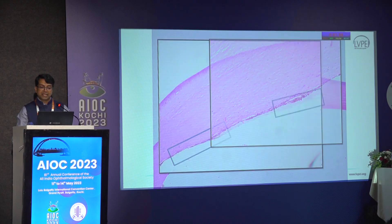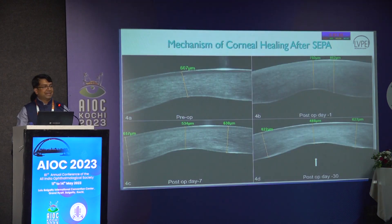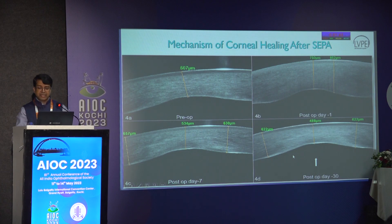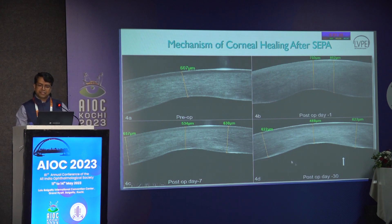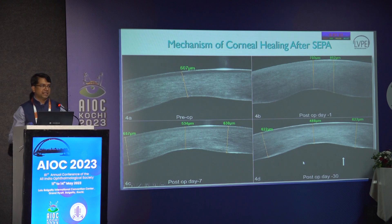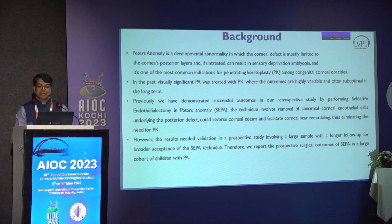This OCT shows the anomalous layer, and we went back to the lab where we also demonstrated this anomalous layer present just behind the defect. In one postoperative case following SEPA, at the end of seven days the edema was resolving. It was a 4x4 mm defect, and the arrow is showing a very sharp demarcation with the cornea compacting, indicating re-endothelialization, although OCT may not precisely measure endothelialization.